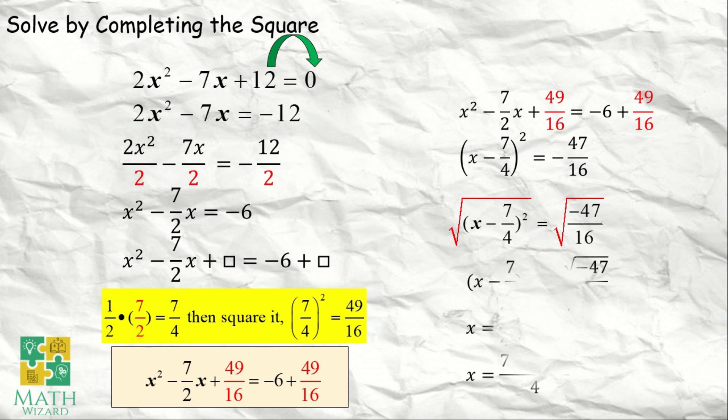Getting the square root of both sides, it becomes x minus 7 over 4 is equal to plus or minus square root of negative 47 over 4, since the square root of 16 is 4. Square root of a negative number is an imaginary number. So, the final answer becomes x is equal to 7 over 4 plus i times square root of 47 over 4, or x is equal to 7 over 4 minus i times square root of 47 over 4.